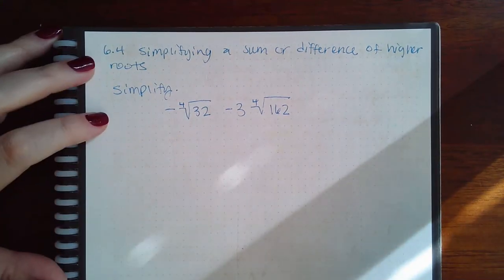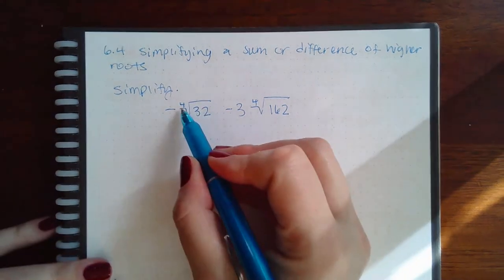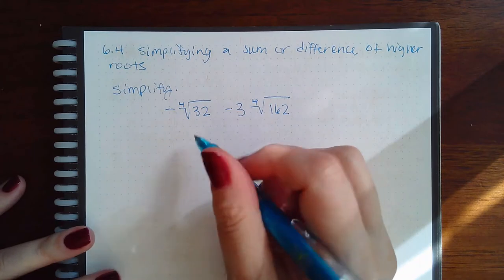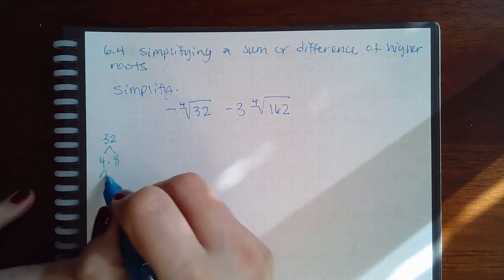Here we have 6.4 simplifying a sum or difference of higher roots. So now we need groups of four, not just pairs, to go inside of our square root. So I'm going to do the same: 32 is four times eight, two times two, two times four, two times two.